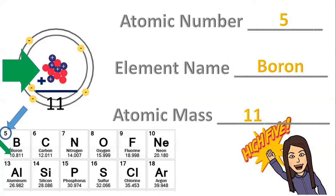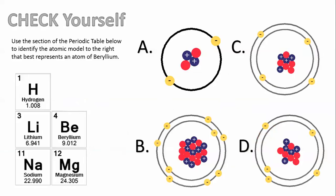We're going to extend our learning now with a more rigorous example. I believe in you. You got this. If you don't feel confident in it yet, just go back and look at previous parts of the video. But don't be intimidated by something new. All right. Check yourself. Use the section of the periodic table below to identify the atomic model to the right that best represents an atom of beryllium.